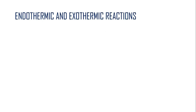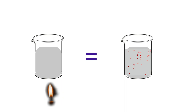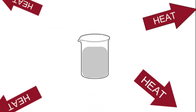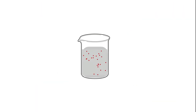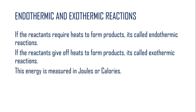Now let's look at the possible types of thermic reactions we can have. We have the endothermic and the exothermic. If the reactant requires heat to form products, it is called an endothermic reaction. If the reactant gives off heat in order to form its products, it is called an exothermic reaction. Note that the energy given off or taken in can be measured in joules or calories, and one calorie equals 4.18 joules.